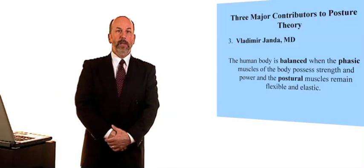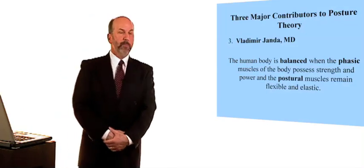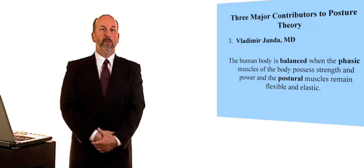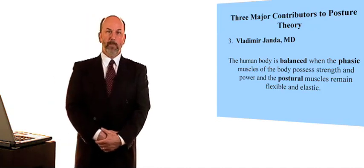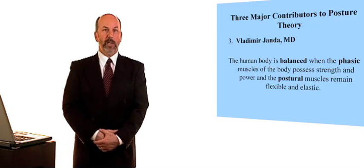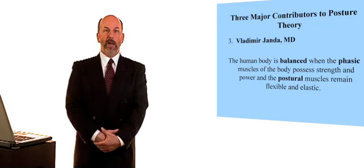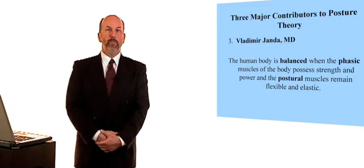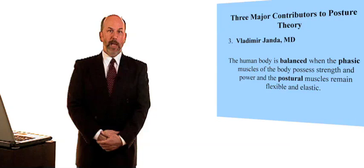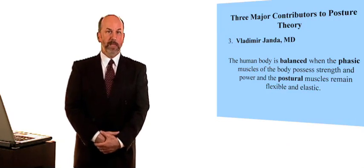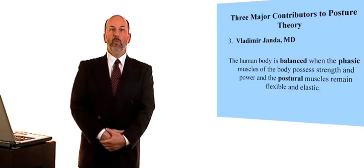And the third contributor is a gentleman by the name of Dr. Vladimir Janda from the Czech Republic, who talked about two types of muscles in the body: muscles that are postural in function and muscles that are phasic. The postural muscles we know that with the effects of aging and gravity and injury tend to become short, and the phasic muscles tend to become weak. Ideal postural alignment addresses these imbalances by stretching what tends to be tight and by strengthening what tends to be weak.